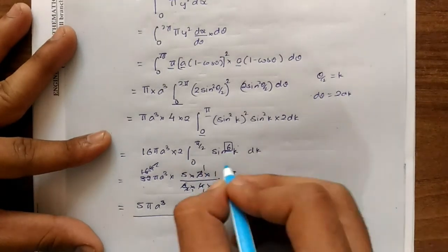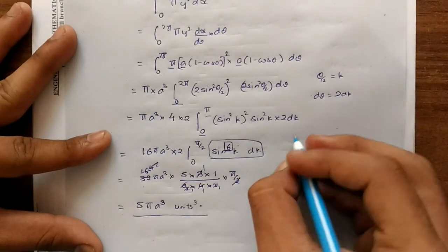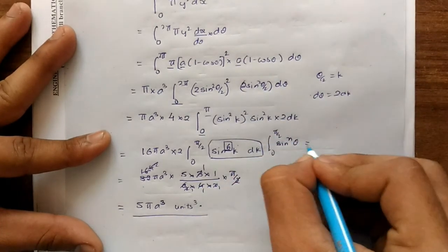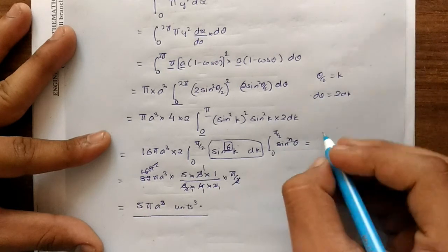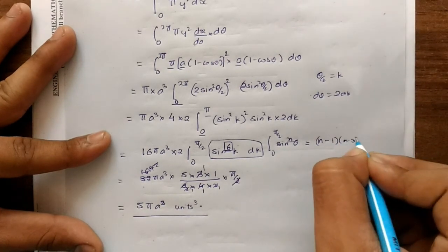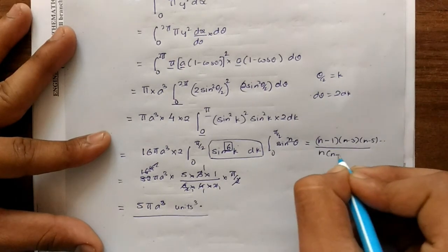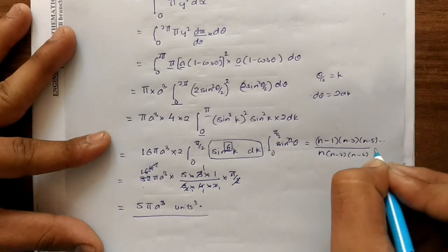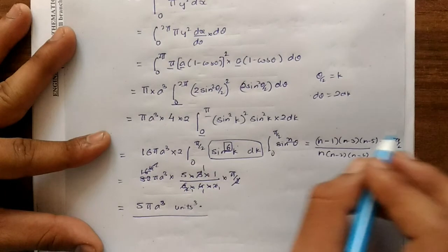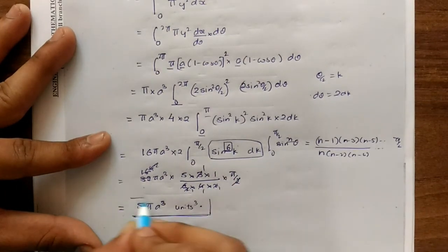So this is the answer for the volume of a cycloid: 5πa³ cubic units. The reduction formula for sin^n(θ) from 0 to π/2: if n is even, it equals (n−1)(n−3)(n−5)…/[n(n−2)(n−4)…] times π/2, and if n is odd, it does not end with π/2. That is the formula.